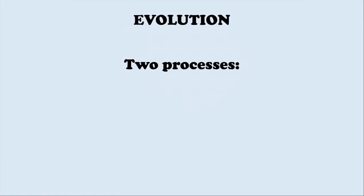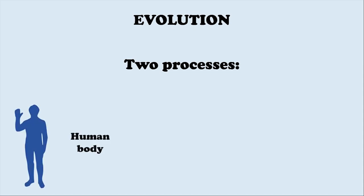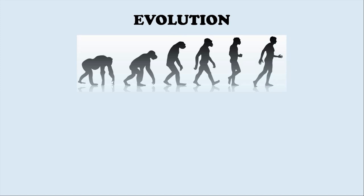When we talk about evolution, we deal with two different kinds of processes: the evolution of the human body and the evolution of human behavior. Evolution is the change in characteristics of the species over several generations and relies on the process of natural selection.